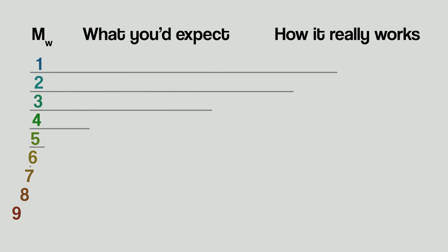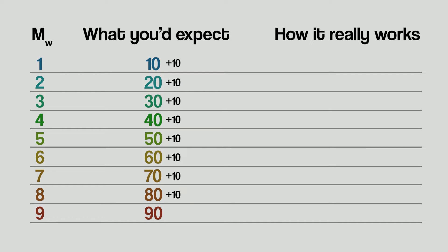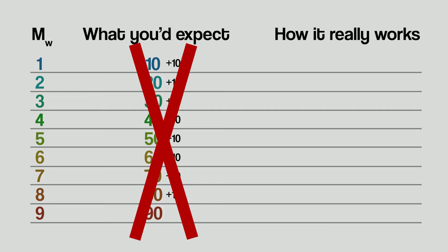Let's use some example numbers to explain this. Let's say a magnitude 1 earthquake releases 10 units of energy. You'd probably then expect a magnitude 2 to release 20 units, a magnitude 3 to release 30, and a magnitude 4 to release 40, and so on. The idea here is simple: each time you go up a magnitude, you add 10 units of energy. But this isn't actually how it works.